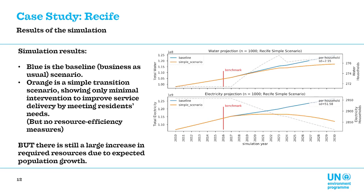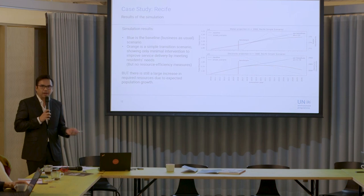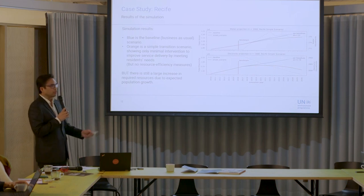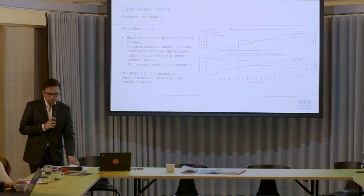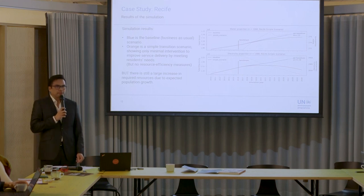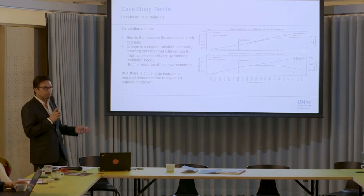Through this simulation program, the blue line represents the business-as-usual baseline scenario and the orange line is the transition scenario showing very minimal intervention — but the orange line did not include any resource efficiency measures. One of the main conclusions from this small study is that a large increase in resources would still be required because of expected population growth, and that the city would have to implement resource efficiency measures if it would be able to respond to the services the population requires. This was something we put forward to the city because it was not initially included in their 100-year plan.